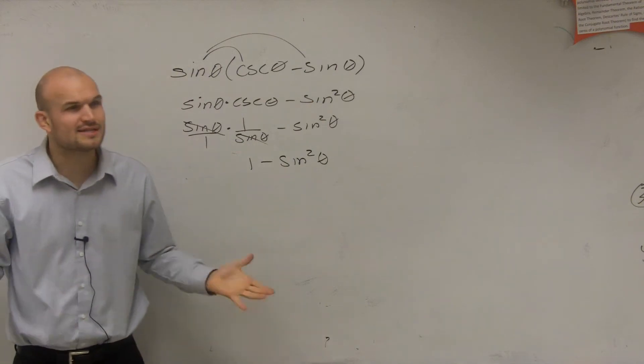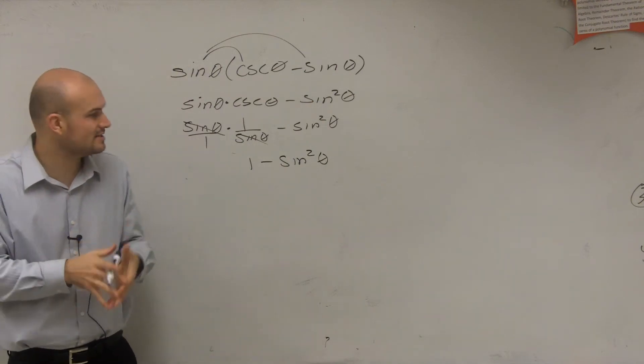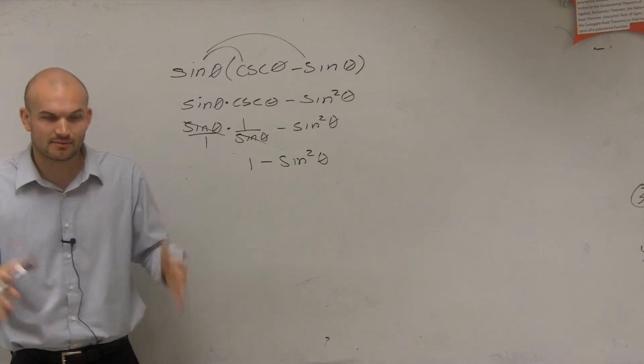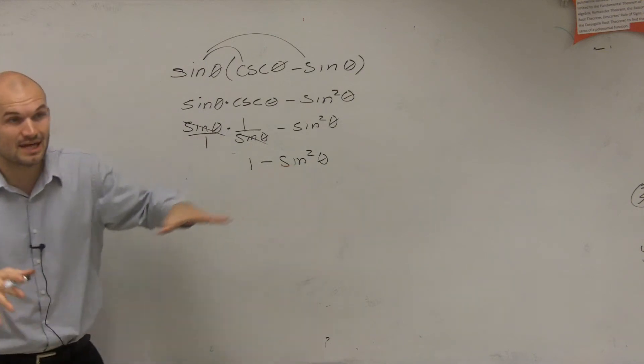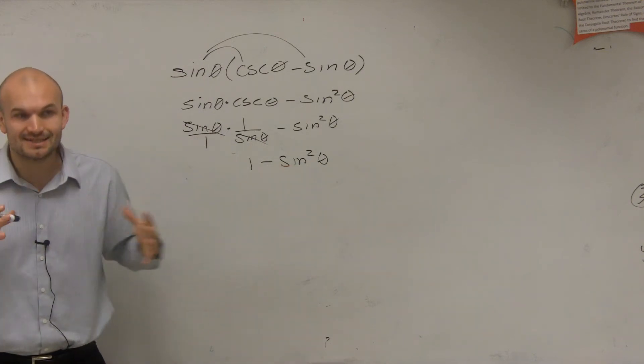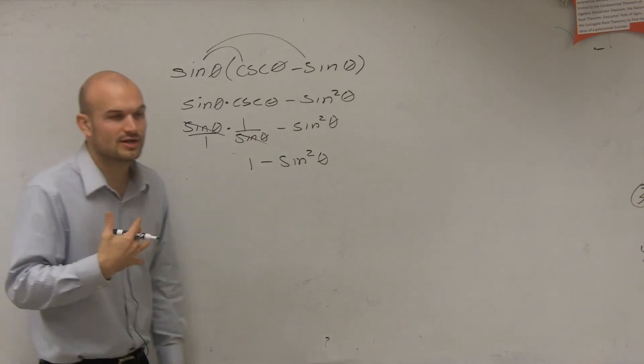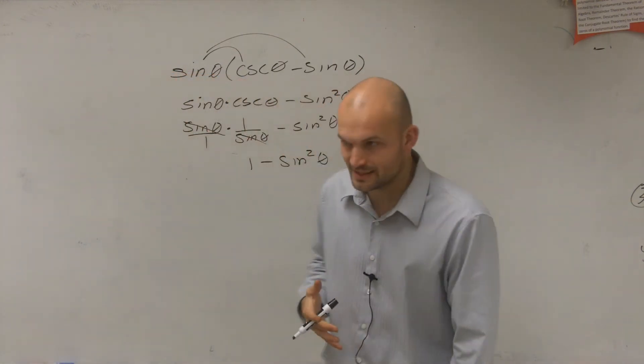And then remember, we're just still trying to simplify. Can we write this as one trigonometric term, or a very simplified term? So we automatically see sine squared. Any time you see your trigonometric term squared, always try to think of, can I use my Pythagorean identities?